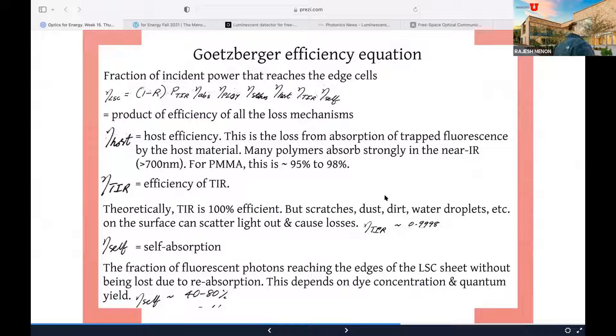Then the last few terms are relatively simple. There's the host efficiency, which is simply saying that we are saying this host material, which is the polymer or the glass is transparent, but it's not perfectly transparent. It's not 100%. It absorbs sunlight. So this is the loss from absorption of the trapped fluorescence by the host material. Many polymers absorb strongly in the near-infrared period of 700 nanometers. For PMMA, which is a pretty decent material to work with, plexiglass, this efficiency is about 95 to 98%. So 5 to 2% losses. Eta_TIR is the efficiency of total internal reflection, because remember, the fluorescent photons are trapped within the slab. Now, theoretically, it's 100% efficient. This is how total internal reflection is called total, right? Everything is reflected. However, in practice, it's never 100%, because scratches, dust, dirt, water, etc., on the surface scatter light out, and that is the losses, right? So a good number is 99.98%.